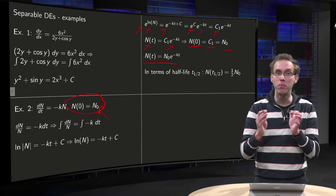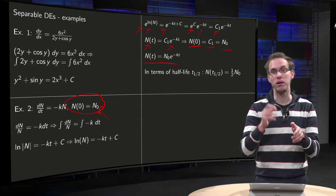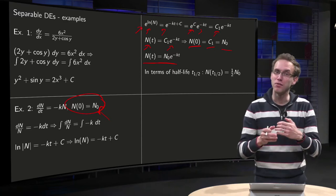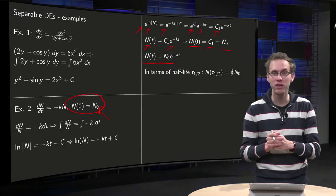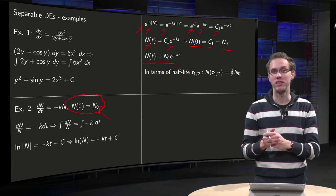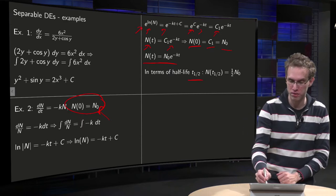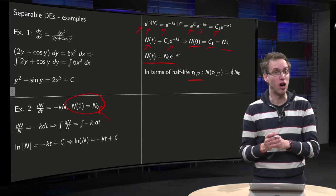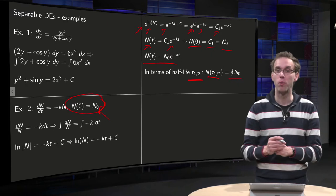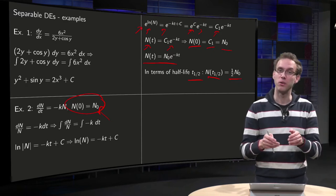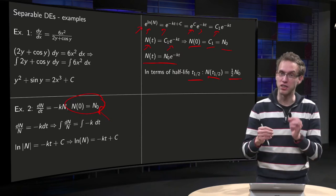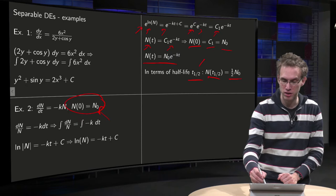n of t, the number of atoms as a function of time, equals n0 times e to the power minus kt. As a mathematician, we are happy now. As a physicist, we can go a bit further, because this k also has some interpretation. You can interpret it in terms of the half-life time, t half. What is this t half? Well, the quantity at t half is one half of the original quantity. After one half-life, the number of atoms has halved. That's the definition of this t half.